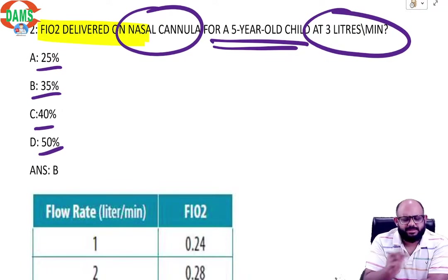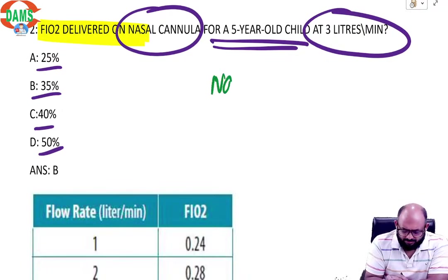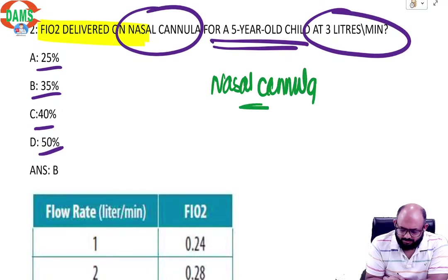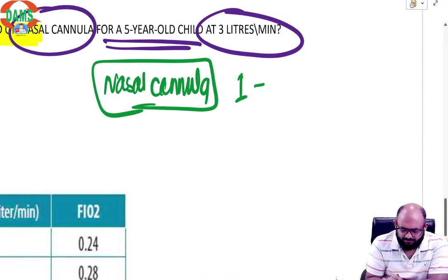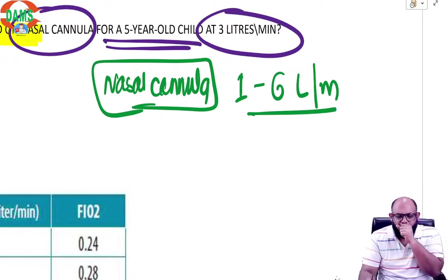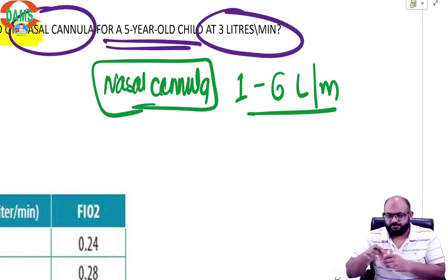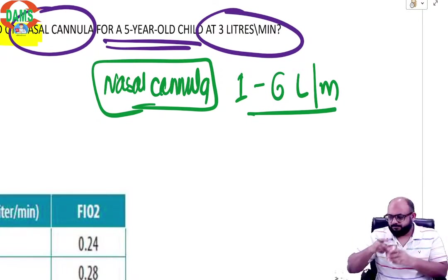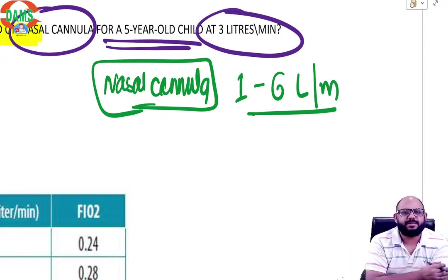We have discussed this so many times that nasal cannula is one of the basic oxygen delivery devices that delivers between one to six liters per minute.